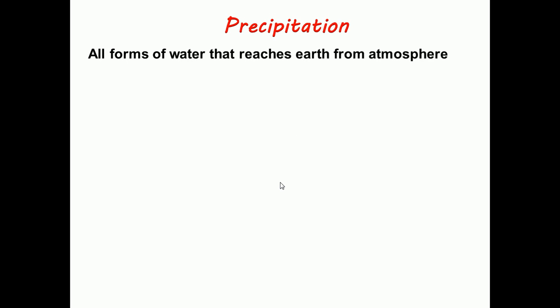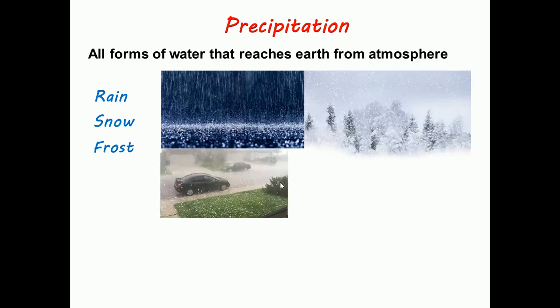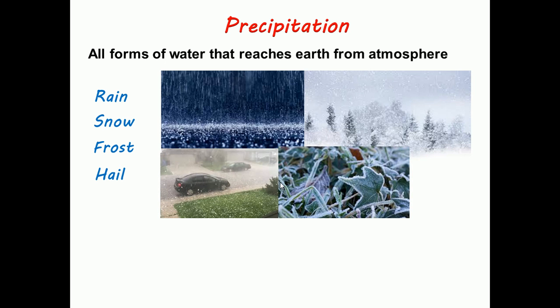Precipitation denotes all forms of water that reaches earth from atmosphere. The usual forms of precipitation are rain, snow, frost, hail, and dew.